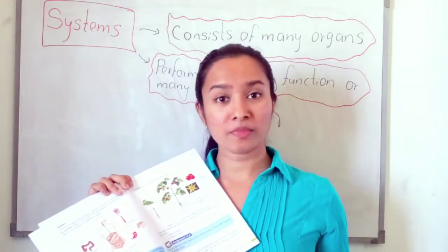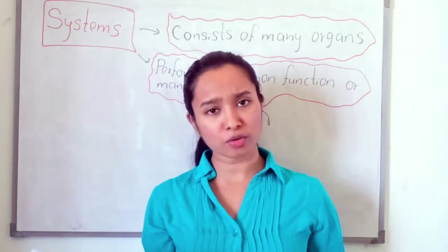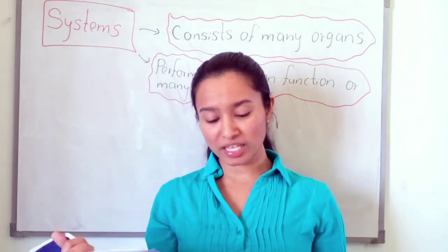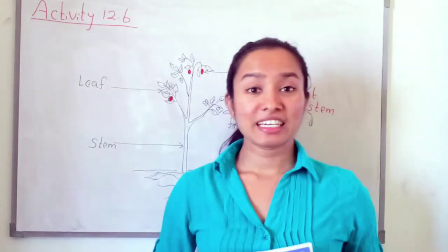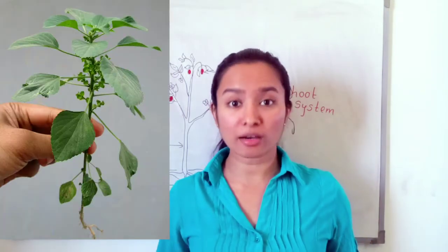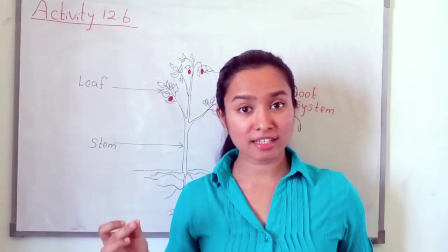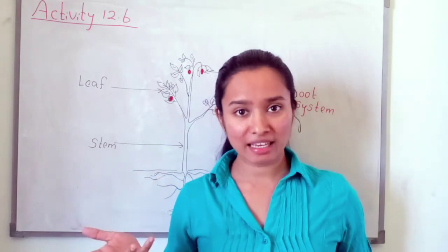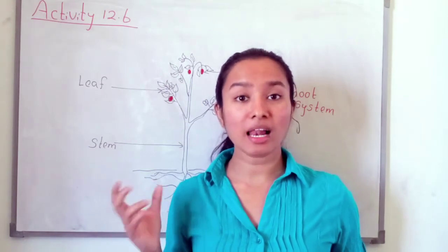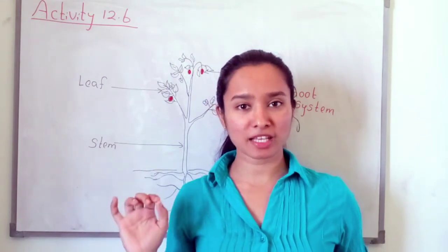Now we have to know what systems exist in plants. Let's do Activity 12.6. In this activity, you have to uproot a Commelina plant, observe what systems and organs you can see, then draw a line diagram and name the systems and organs.